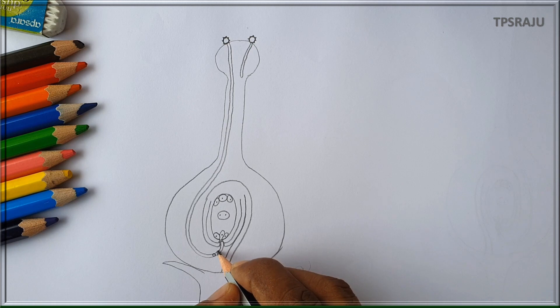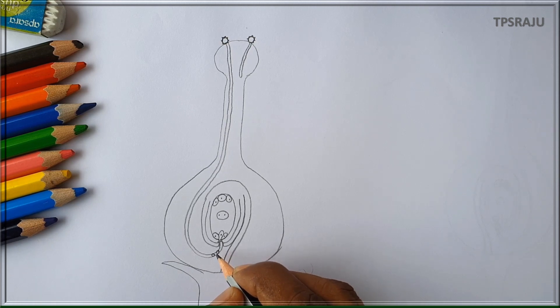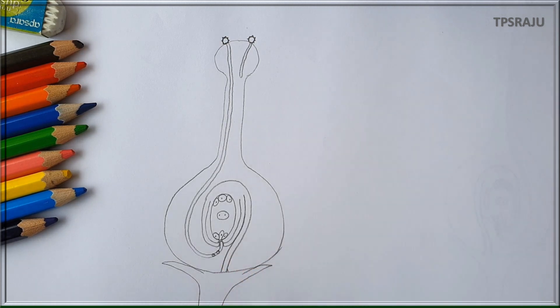Two male nuclei are present in the pollen tube. Further these two male nuclei are released into the ovule. One male nucleus fuses with egg to form zygote. Another male nucleus fuses with secondary nucleus to form endosperm nucleus. Likewise double fertilization occurs in the plants.